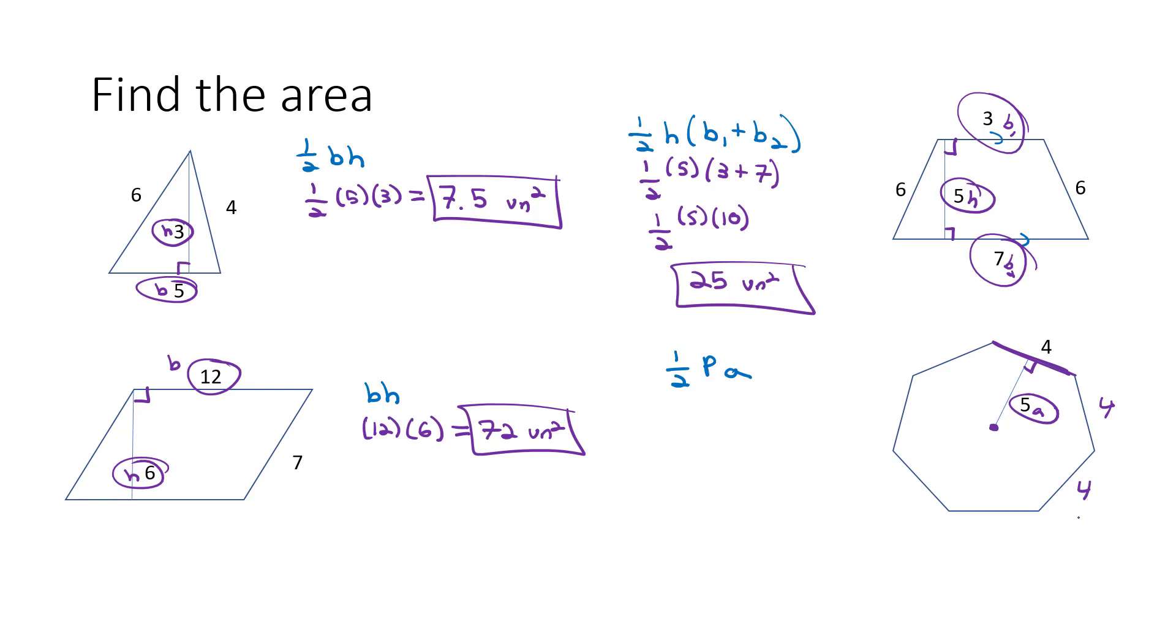But 4 is just this one side on top. We've got another side, counting around: 3, 4, 5, 6, 7 - seven 4s around the outside. So the perimeter, adding all seven 4s together, is 28 units. That's what we want to plug into our formula. 1 half times the perimeter of 28 times the apothem of 4. And when we do that, we get 56 square units.